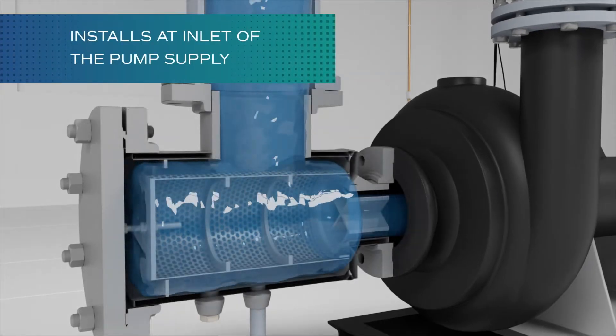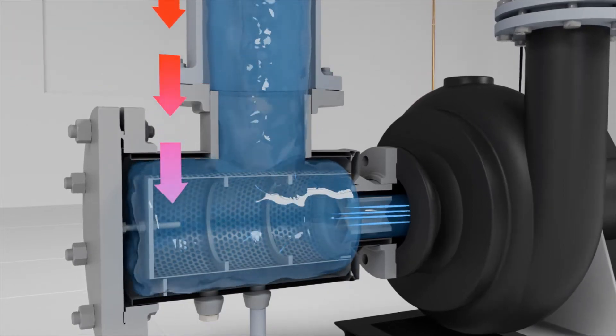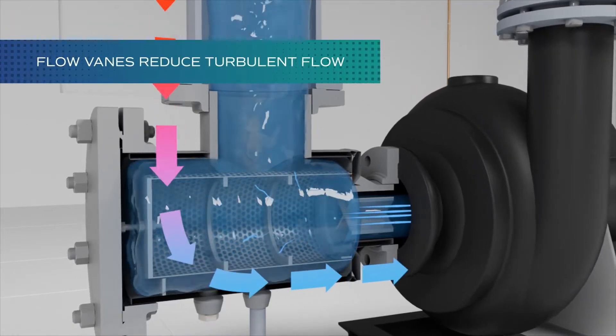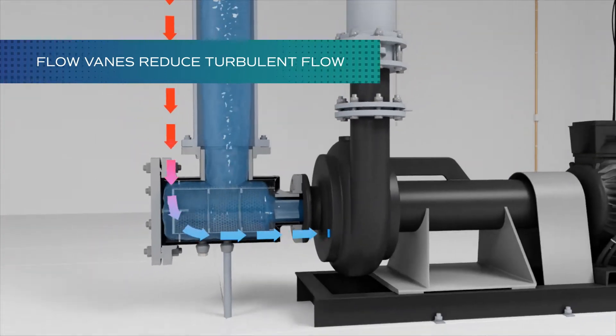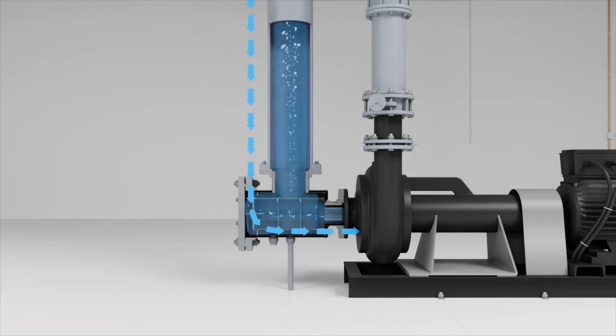Installed at the inlet of the pump, the Suction Diffuser features flow vanes, which provide flow straightening that reduces turbulent flow and the potential for cavitation. This effect increases the efficiency of the pump, resulting in overall cost savings and extending the life of the pump.